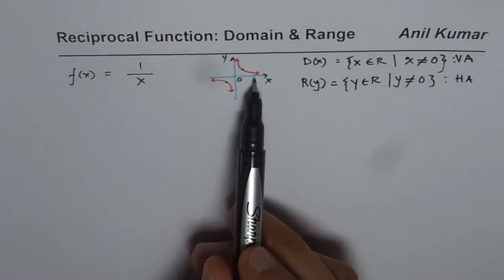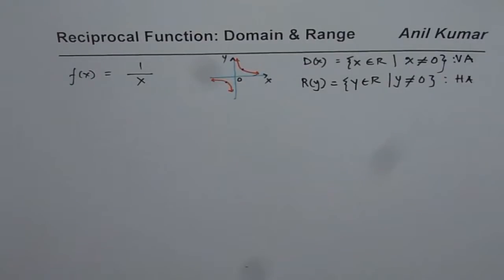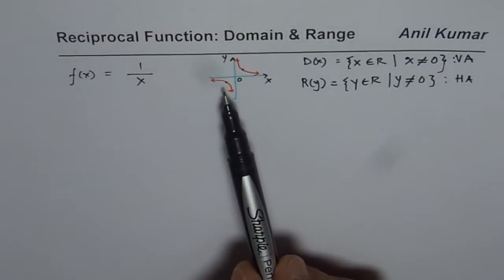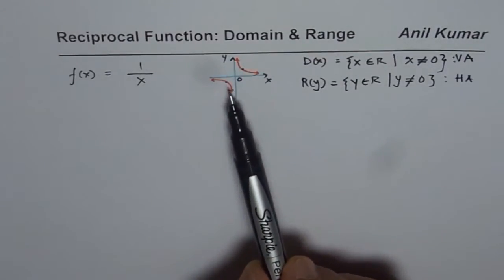The function approaches the x-axis but it is never there, so it is never at 0. That is why in the range the restriction is that y is not equal to 0. That's the parent function. This domain and range has one restriction — they are not equal to 0 — and for the domain it is mainly because of the vertical asymptote.